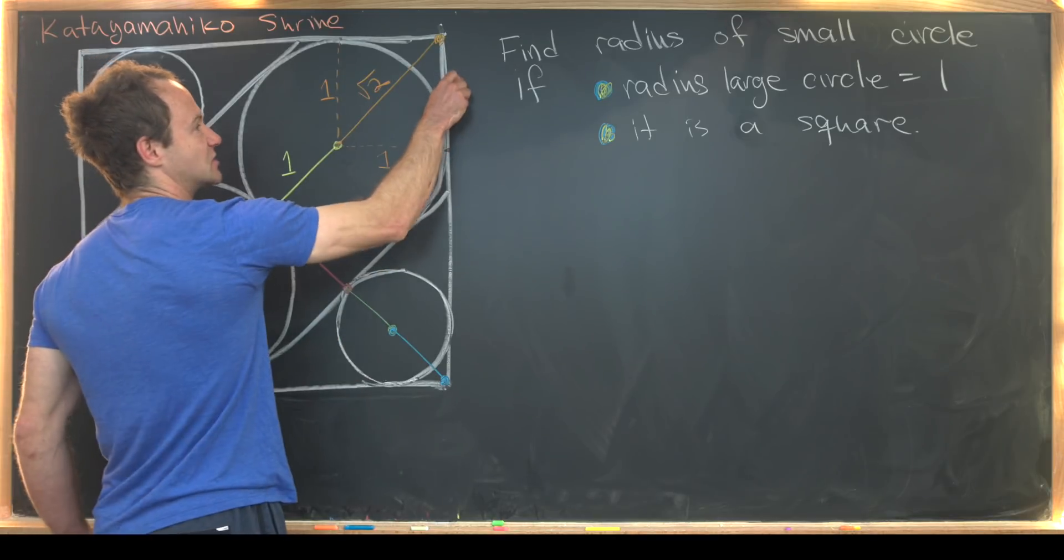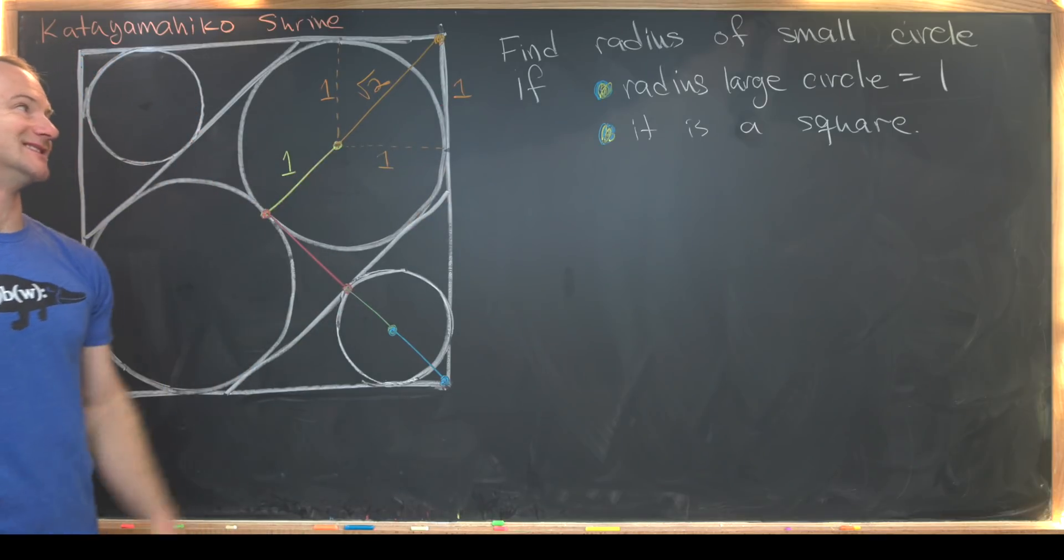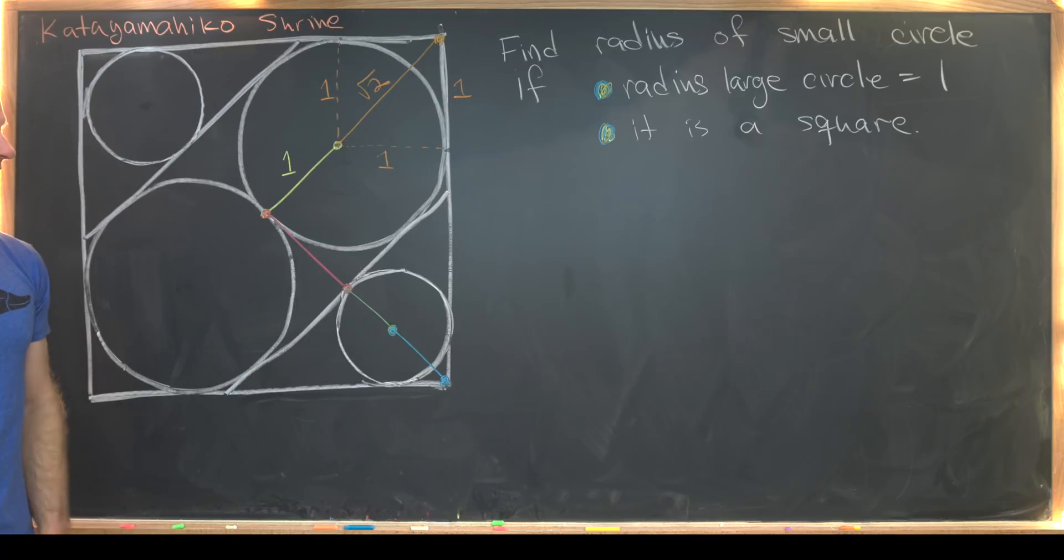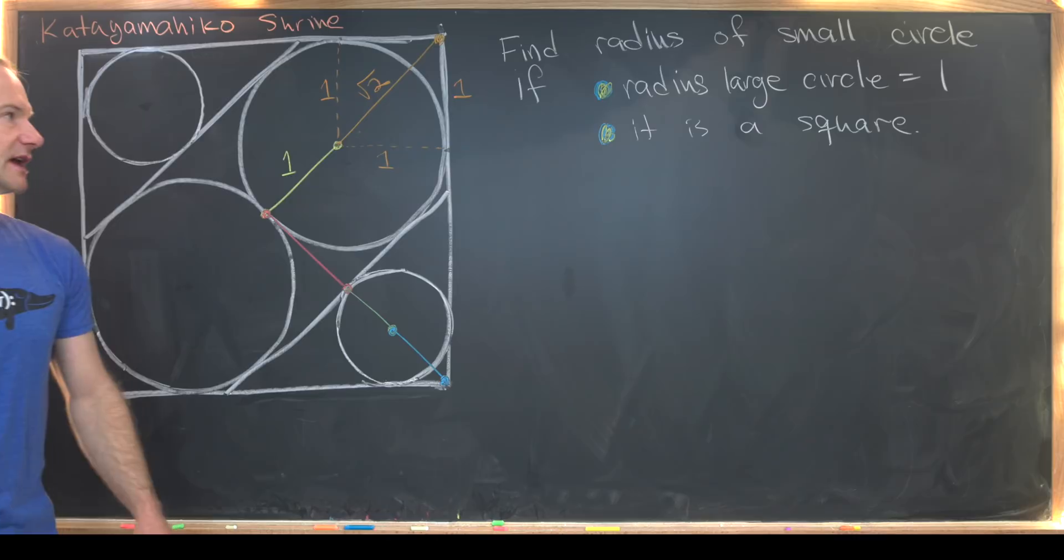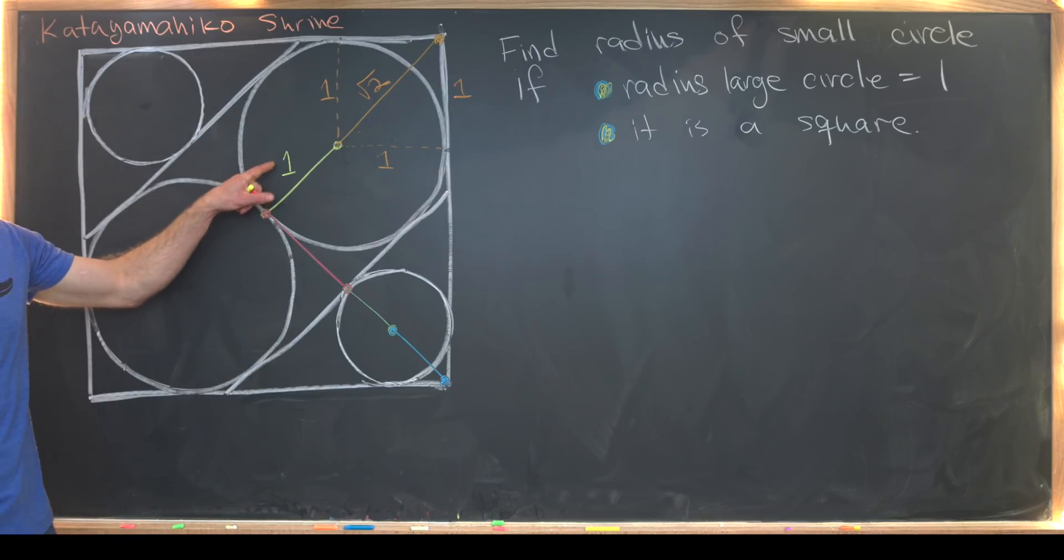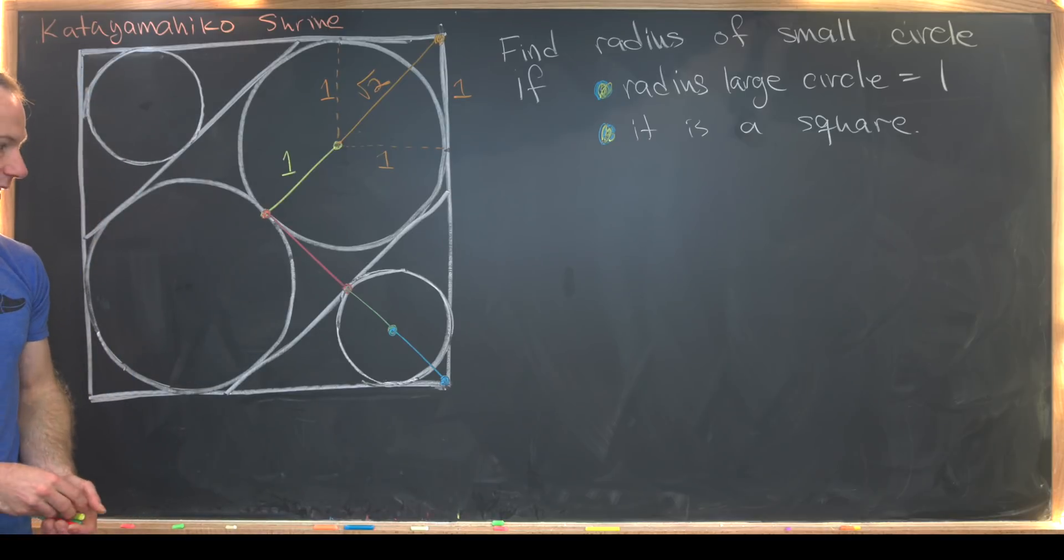Now you can also figure that out just by calculating it. Notice we need 1 squared plus 1 squared to be equal to this squared, which would obviously be the square root of 2 squared. Or you can also argue that this is a 45 degree angle. But notice we've got 1 plus root 2 for this half of a diagonal of the square.